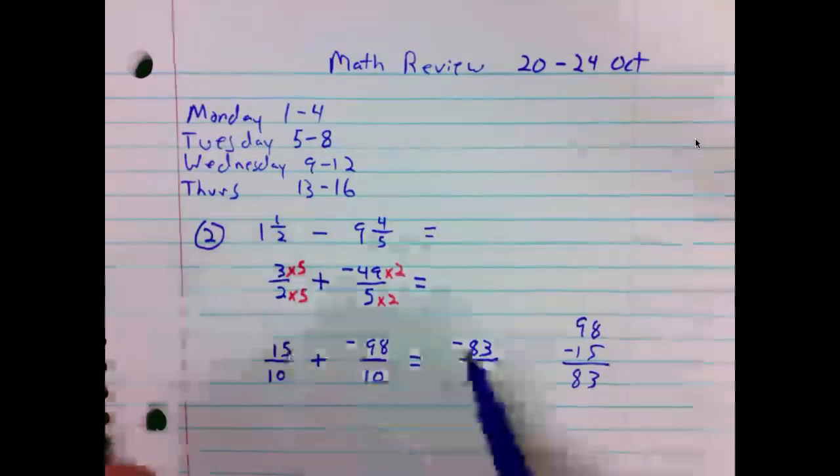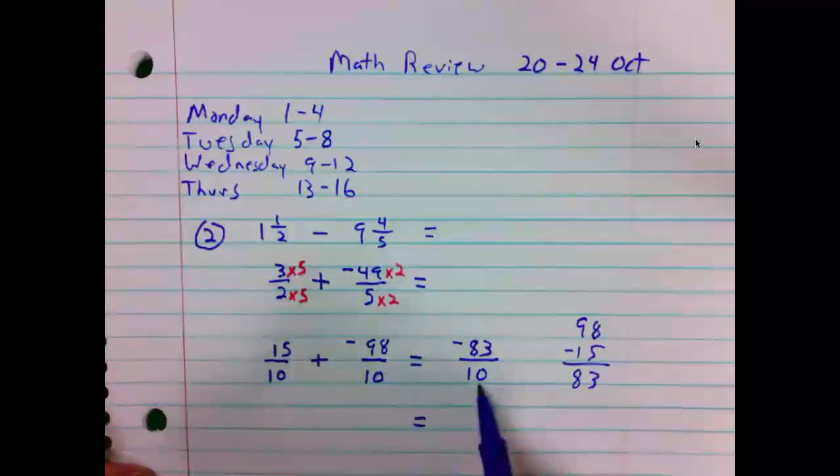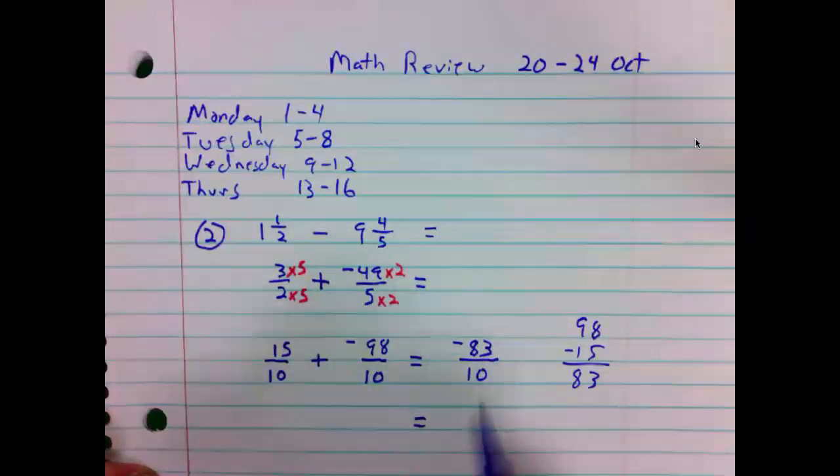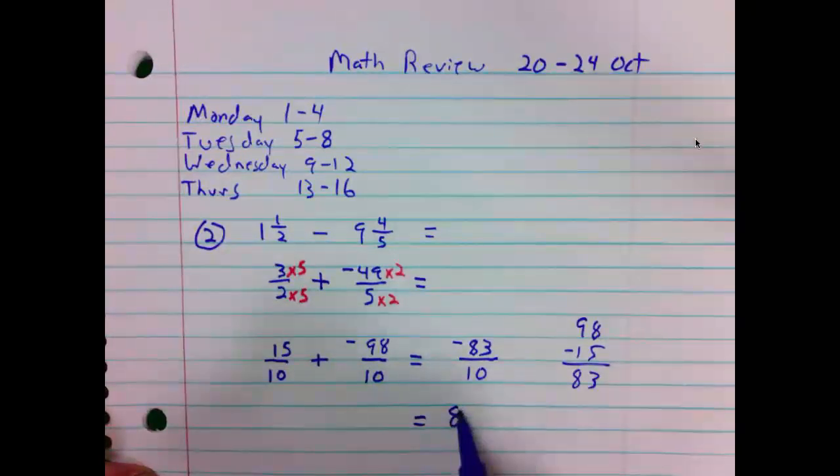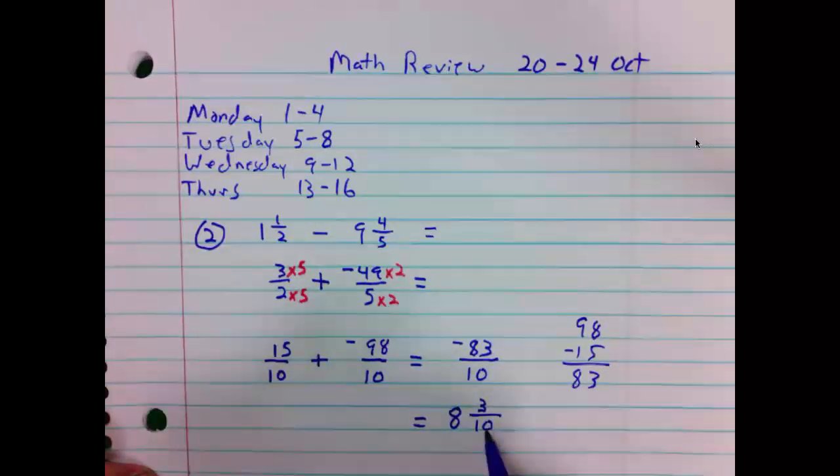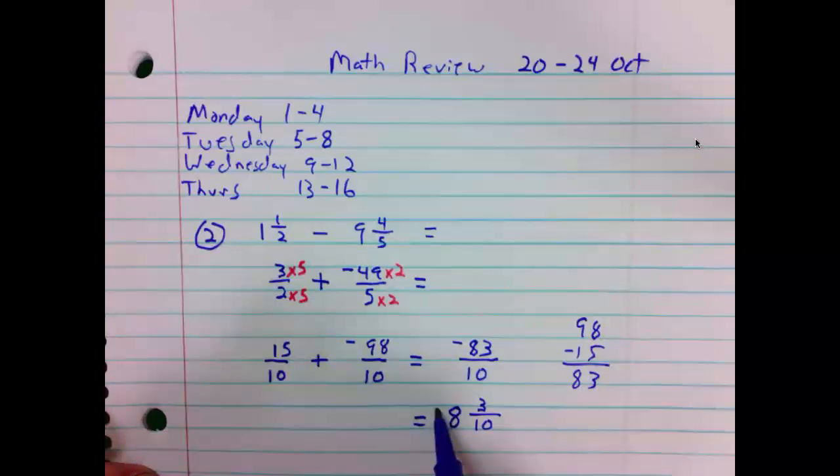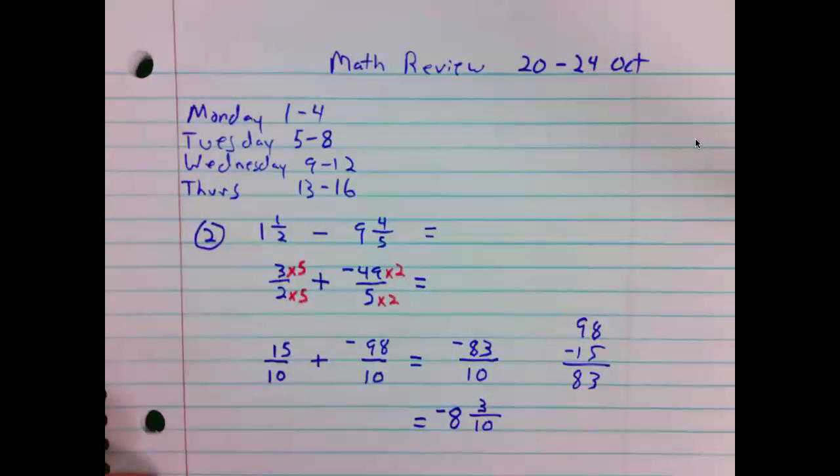We have negative 83 over 10. We should change this improper fraction back into a mixed number. 10 goes into 83 eight whole times with 3 left over. The leftover we express over the denominator. The negative with the numerator is expressed with the whole part of the mixed number, negative 8 and 3 tenths. Next problem.